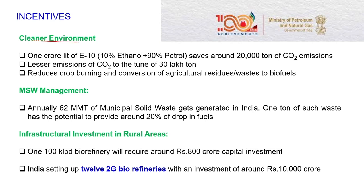The first is a cleaner environment: 1 crore litres of E10 — meaning 10 percent ethanol blended with petrol — saves around 20,000 tonnes of CO2 emission. With 10 percent blending, this amounts to close to 20,000 tonnes of CO2 emission reduction from India alone, and lesser emissions of carbon dioxide to the tune of 30 lakh tonnes. It also reduces crop burning by converting agriculture residues and waste to biofuel.